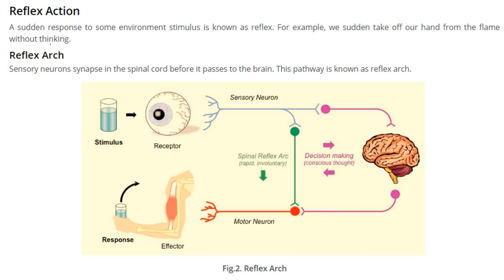Reflex action: whenever there is some stimulus, the body reacts to it. A sudden response to an environmental stimulus is known as a reflex. For instance, if we touch something hot, in a fraction of a second we pull our hand away from the flame or the hot object.